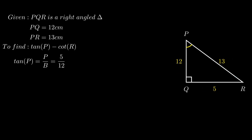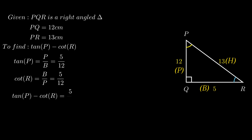To find the value of cot R, we consider the acute angle R. Side QR is adjacent to angle R and is called the base, and side PQ is the perpendicular. Cot R equals the ratio of base to perpendicular, which is QR over PQ. Putting in the values we get cot R equals 5 over 12. Therefore, tan P minus cot R equals 5 over 12 minus 5 over 12, which equals 0.